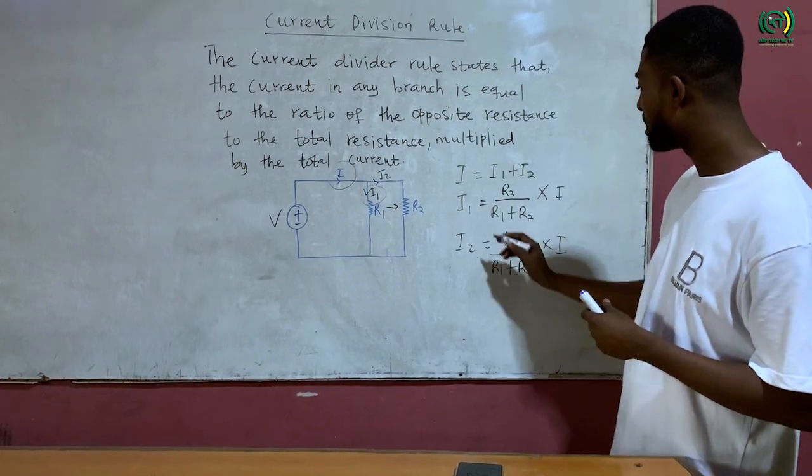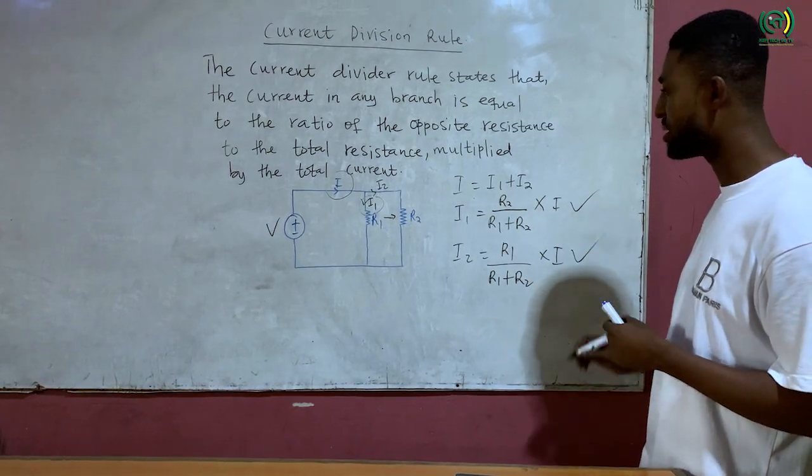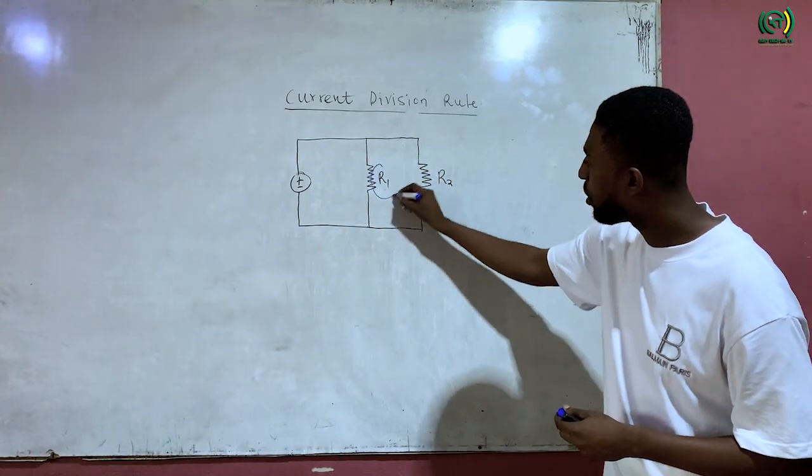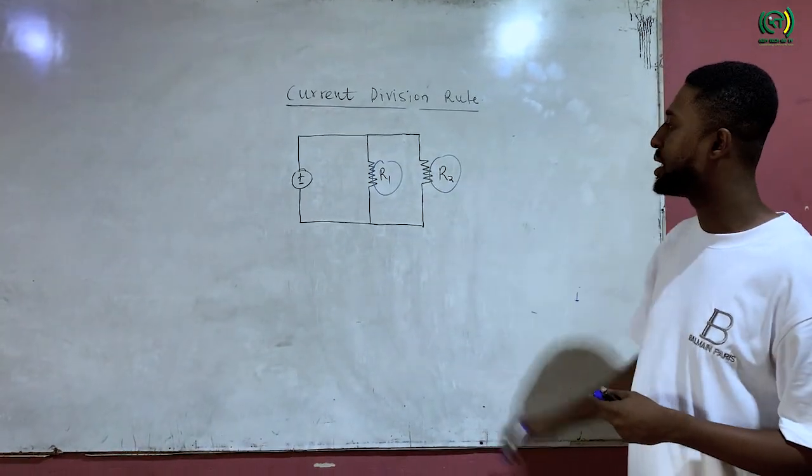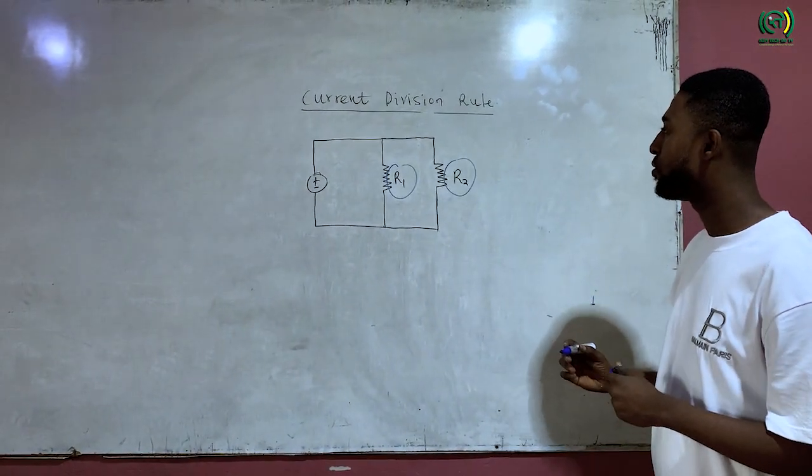So let's quickly look at how this formula came into existence. The circuit diagram on the board, we realize that R1 and R2 are connected in parallel and whenever resistors are connected in parallel, they share the same voltage.